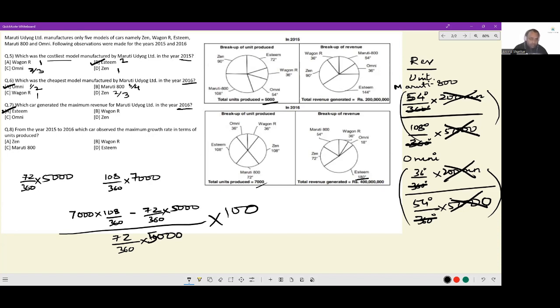Now, how we can take our work forward? See, this 100 is going to be identical regardless of what car you take, so this is not useful for comparison. We are left with this. Now, even within this, can I break this up into two fractions? 7000 into 108 by 360 by 72 by 360 into 5000 minus, this and this are identical, minus 1. 1, when it comes to comparison, this one is also not useful for us because it is going to be identical everywhere.